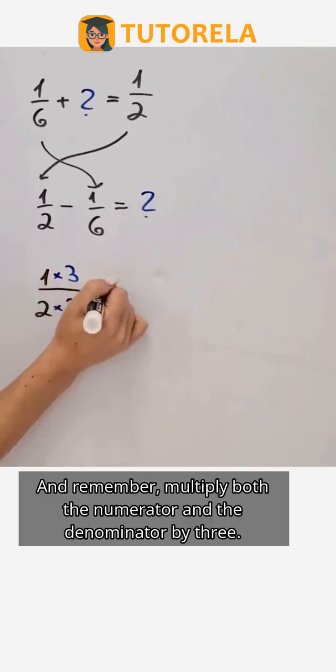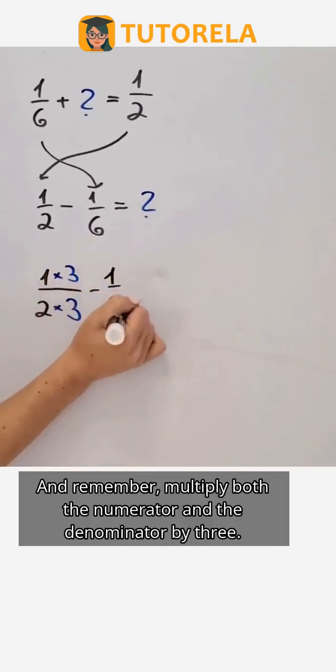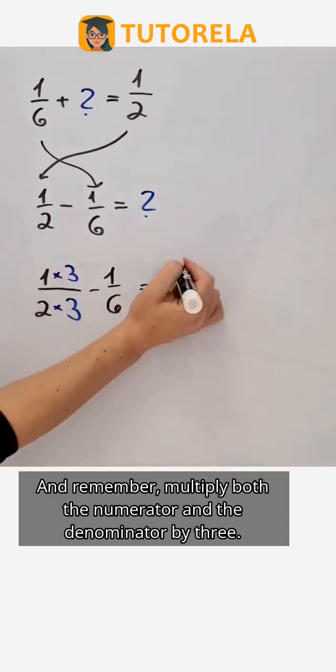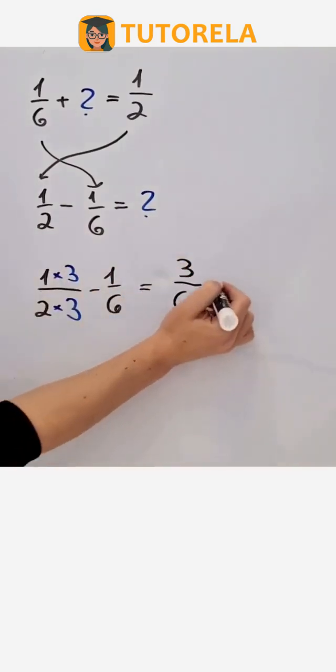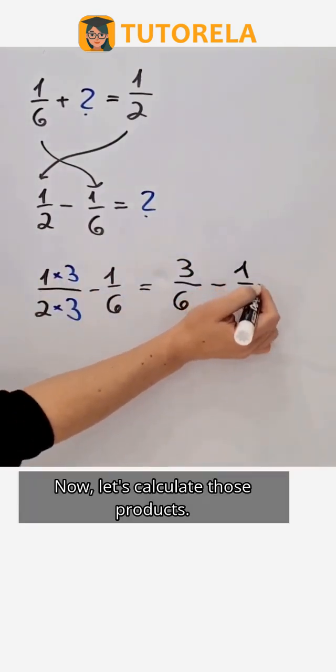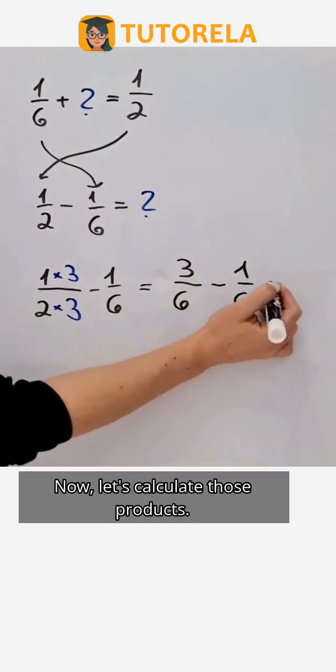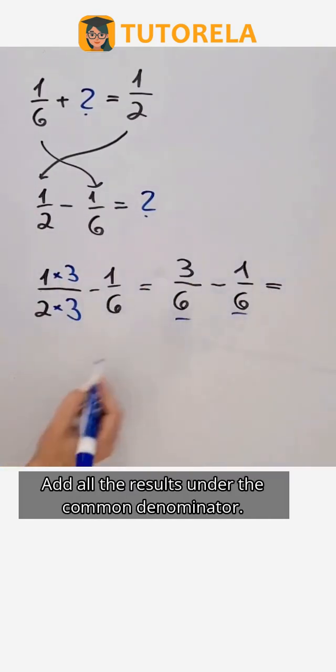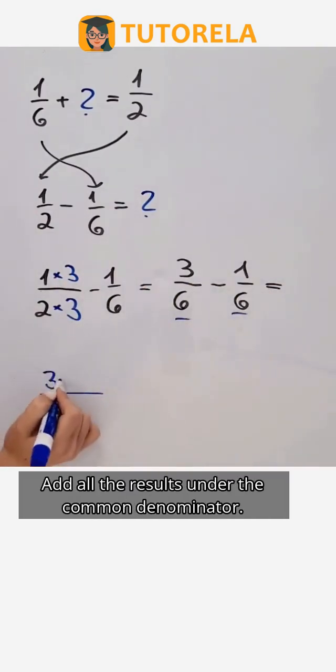And remember, multiply both the numerator and the denominator by 3. Now let's calculate those products. Add all the results under the common denominator.